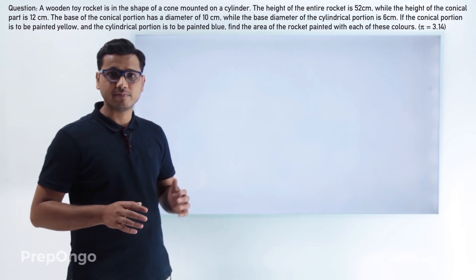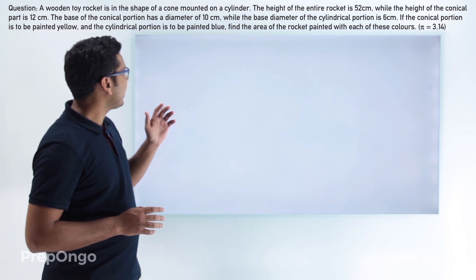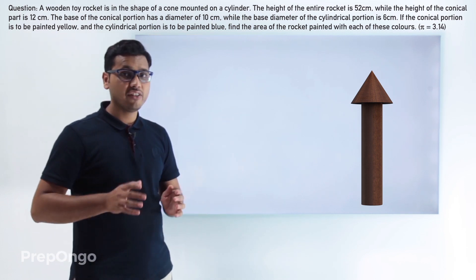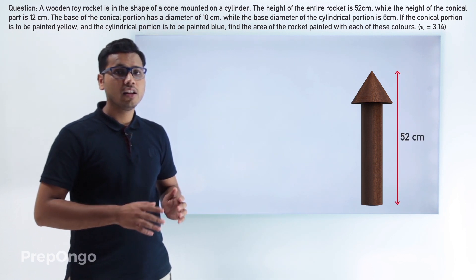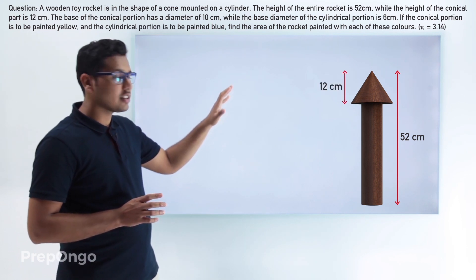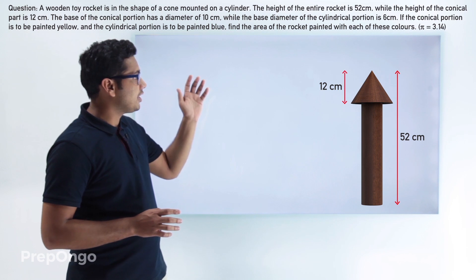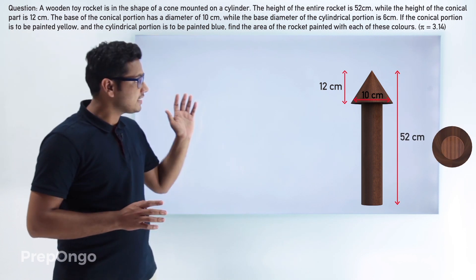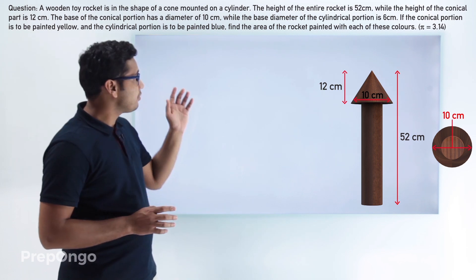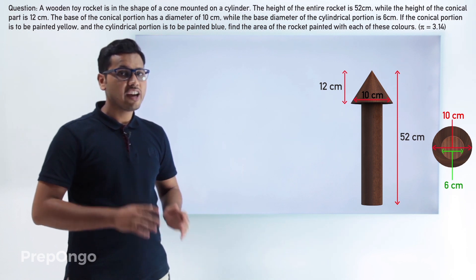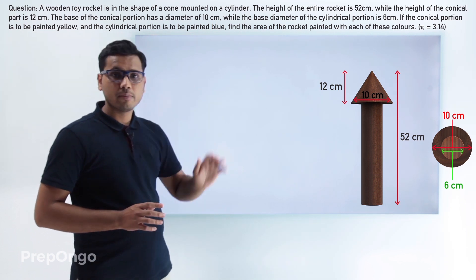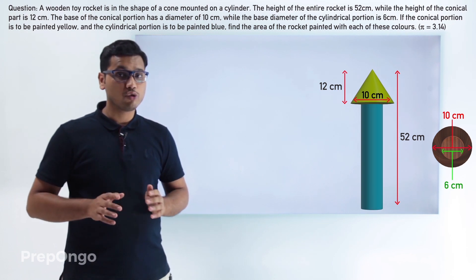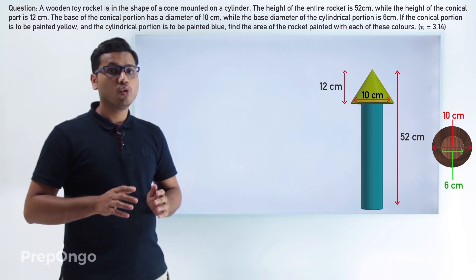Let us try to analyze this question. We have a wooden toy rocket which is in the shape of a cone mounted on a cylinder. The height of the total rocket is 52 centimeters and the height of the cone is 12 centimeters. The diameter of the cone is 10 centimeters and the diameter of the cylinder is 6 centimeters. We have to paint the cone yellow and the cylindrical part blue. How much of both colors do we need to paint the whole rocket?